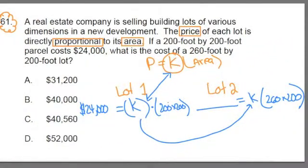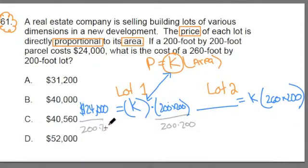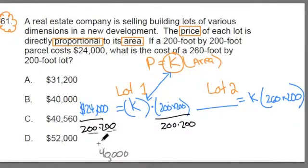Awesome job, Conti. Let's come back to this problem. Let's solve for k. Once we find k in this first part of the problem, we can substitute it into the second and find the price of the second lot. We'll just continue out that algebra that Conti started, dividing both sides by 200 times 200. What's 200 times 200? Well, 2 times 2 is 4. We got four zeros, so that's 40,000. So we have 24,000 divided by 40,000 equals, these cancel out, so that equals k.